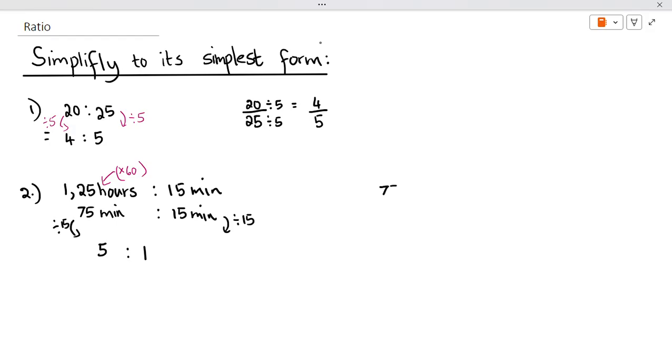Here you have 75 minutes over 15 minutes. What I want to show you is that the minutes and the minutes will cancel out. So your final answer should not have minutes next to it. It should just be 5 to 1, because you're dividing by 15 on both sides and you end up with 5 over 1.